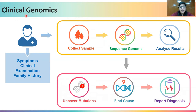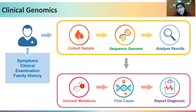The essence of clinical genomics revolves around the clinician who, on the basis of symptoms, clinical examination, and family history of a patient, collects blood samples from the patient as well as his family members in order to look at the sequence of his DNA to find a causal variant that could be associated with the underlying phenotype that he is observing in the patient, so as to report back the accurate diagnosis.